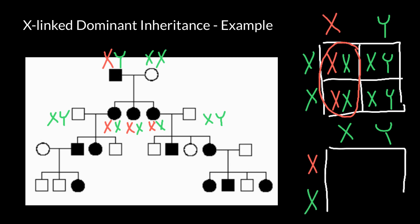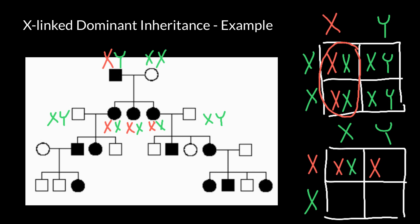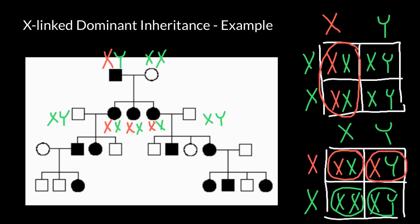When we build the Punnett square again, we see a pattern different from the top example. This time we have the defective X chromosome inherited from the mother's side in two squares, and the normal X chromosome from the mother's side in the other two. Combined with normal Y from the father, we see that 50% of the daughters would be affected, 50% of the sons would be affected, and 50% of both females and males would be unaffected. On average, 50% of the children would be affected.